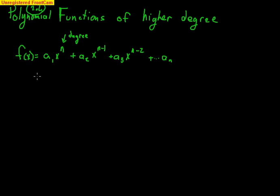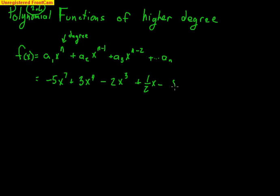Let me give you a quick example of a polynomial function: negative 5x to the 7th, plus 3x to the 4th, minus 2x to the 3rd, plus 1½x minus 8. Notice how we skip some — there's a degree of 7, then 4, 3, then 1, then down to 0. Also notice I made one of these coefficients a fraction, so you realize they do not have to be whole numbers.